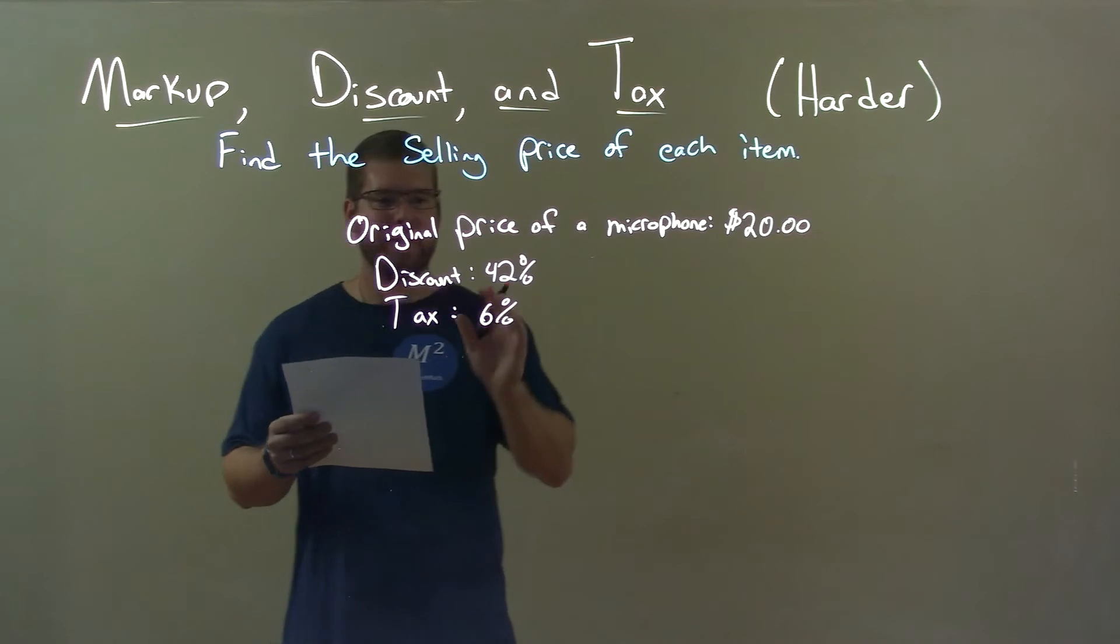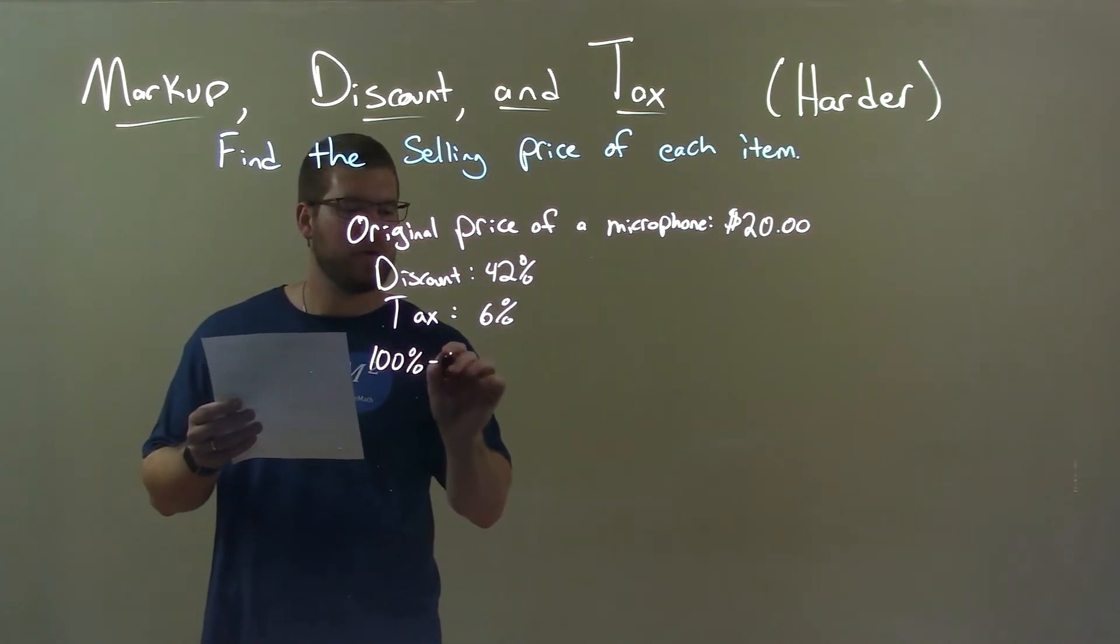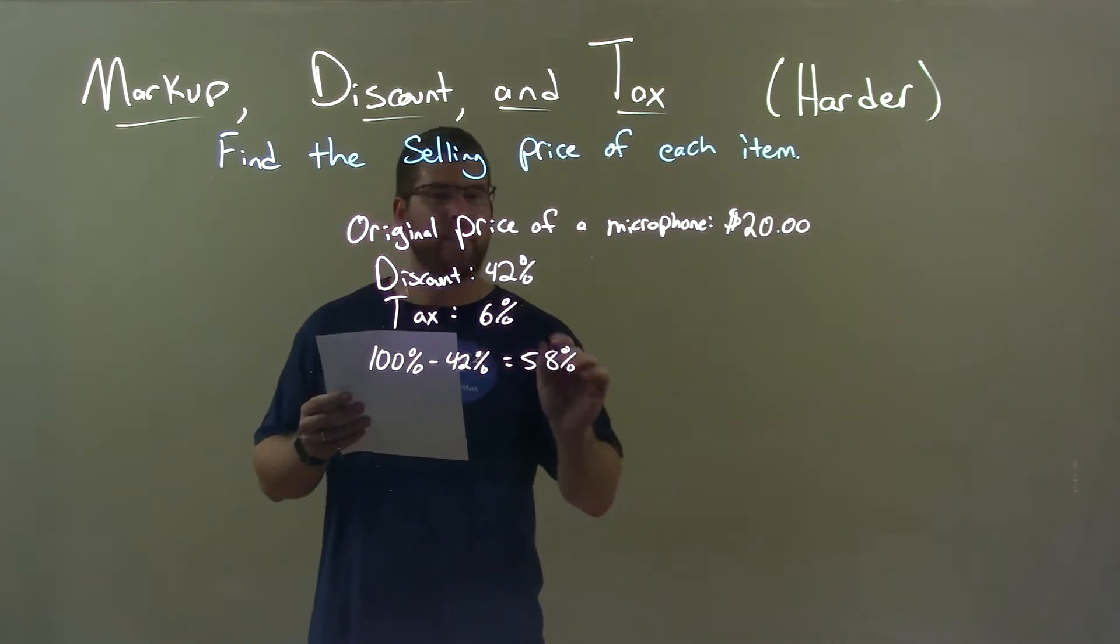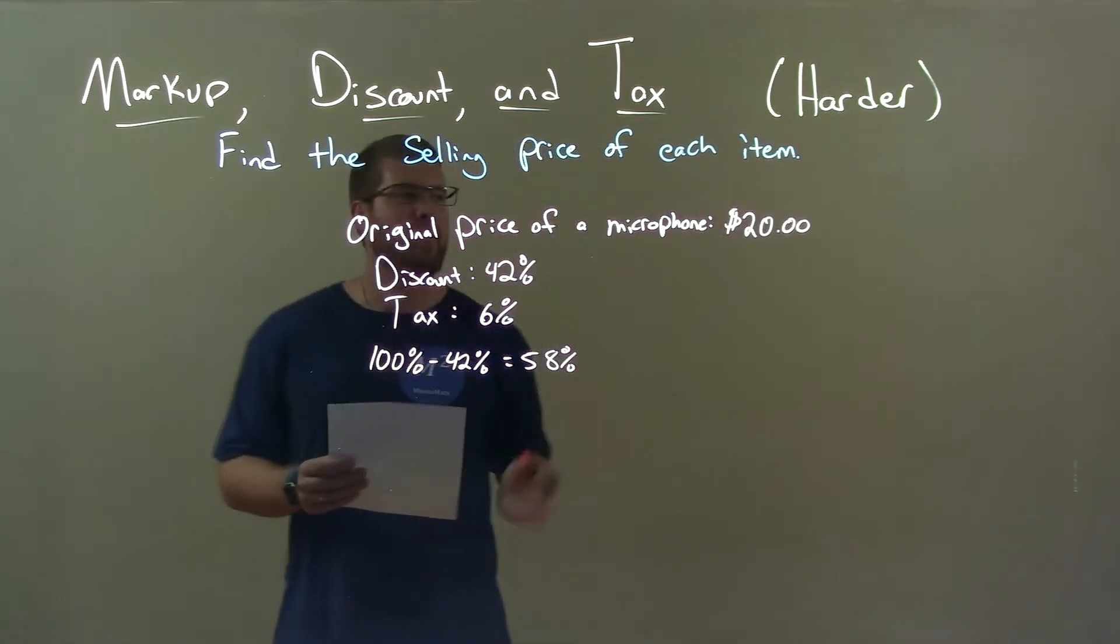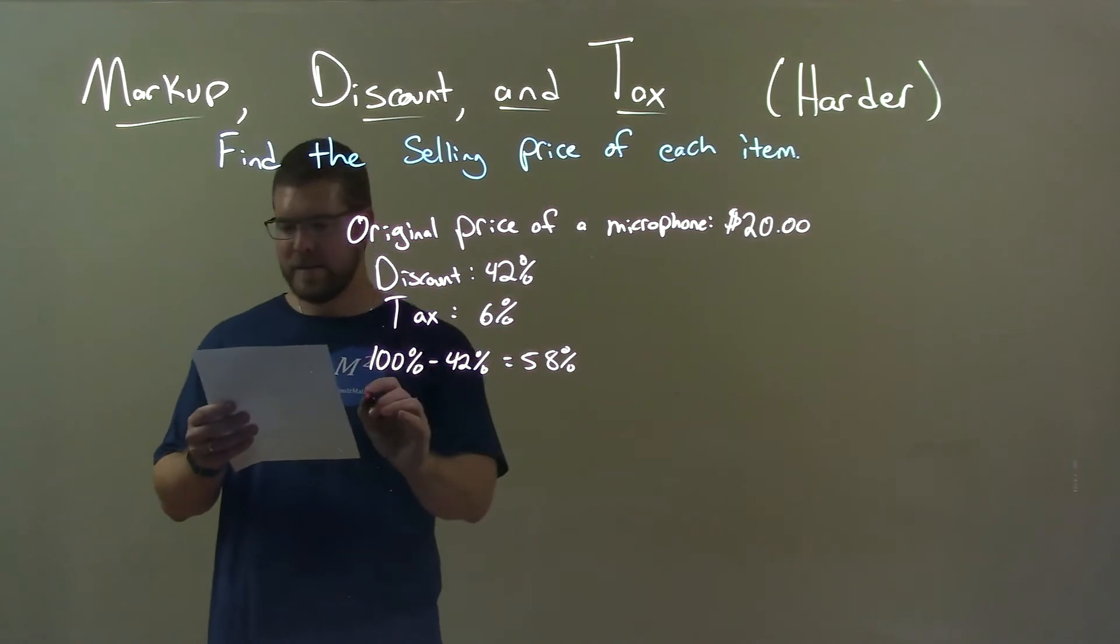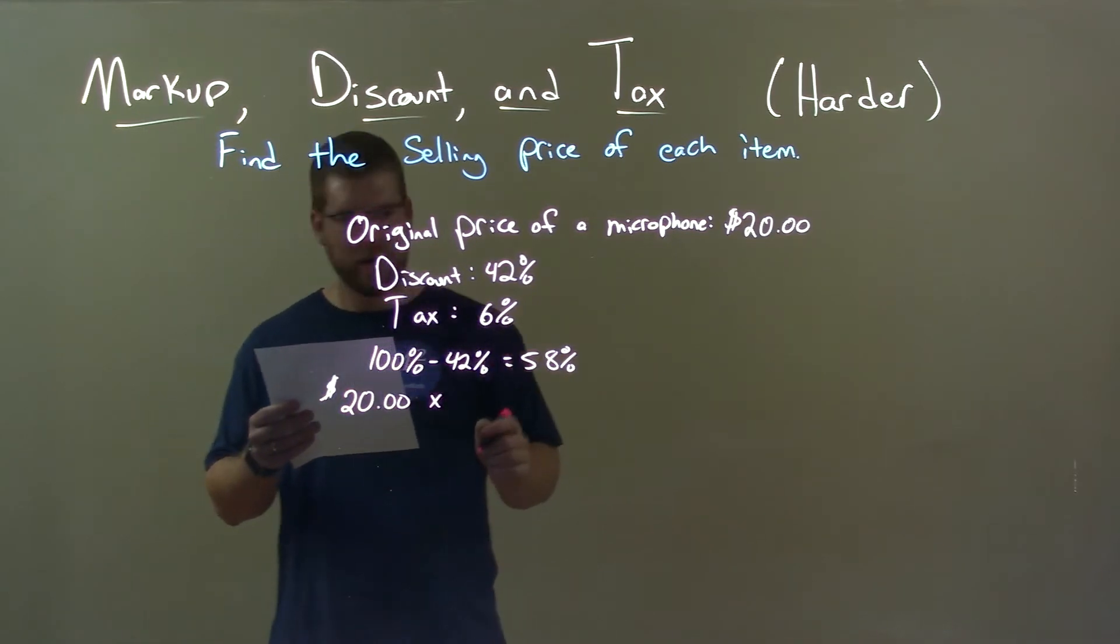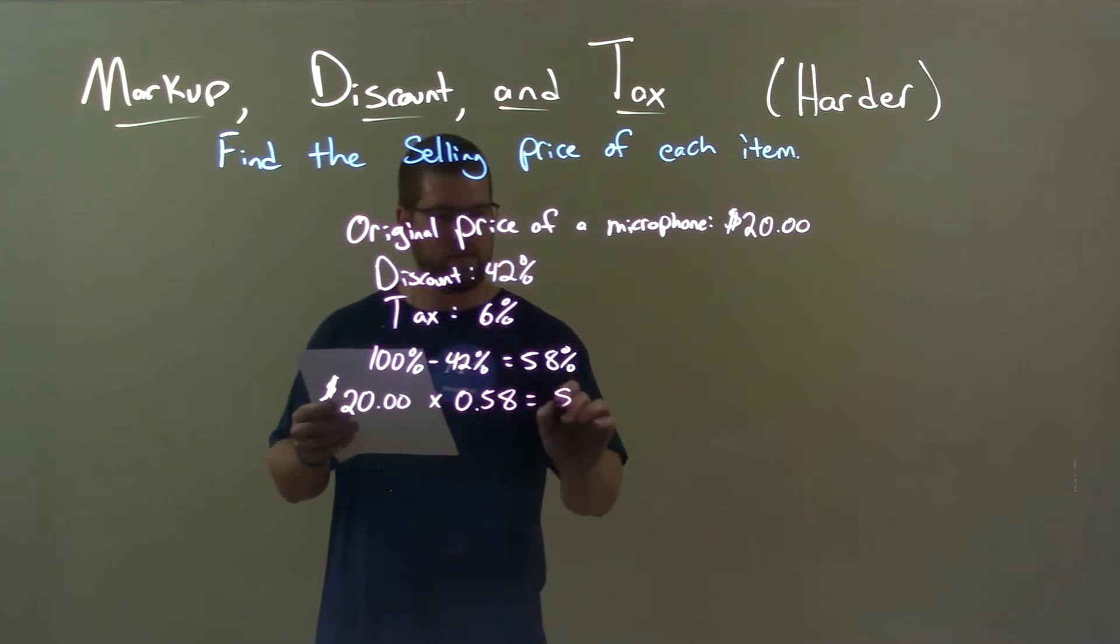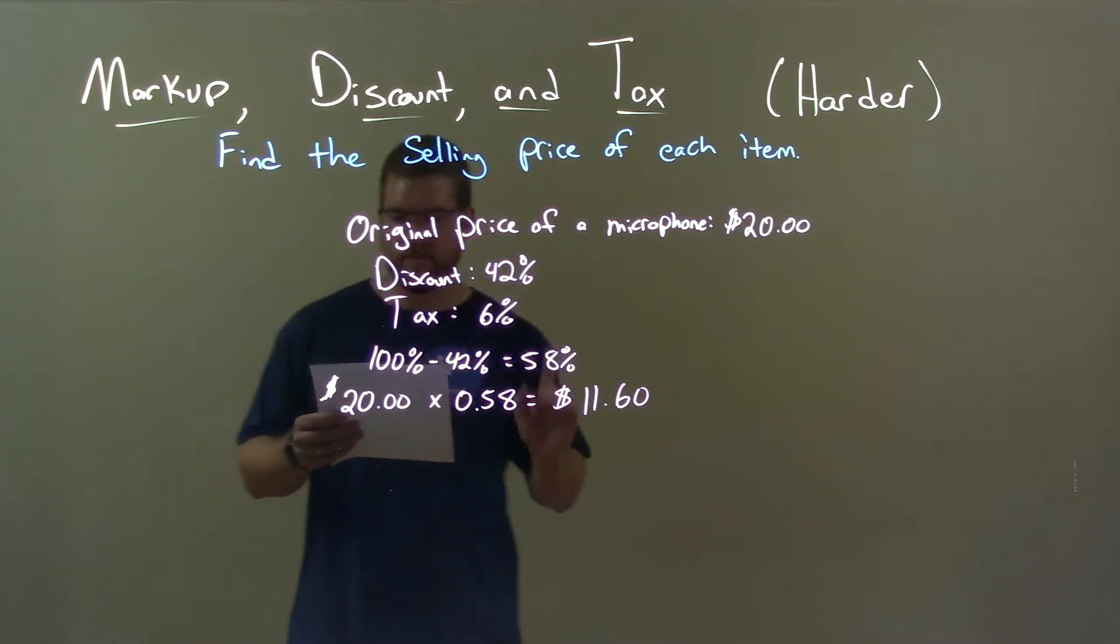Well first thing we want to do is we need to calculate this discount. Well, 100% minus 42% gives us 58%. That means the discount is 58% of the price of the microphone, $20. So we take that $20 and multiply that by the decimal of 58%, which is 0.58. This gives us a cost of $11.60.